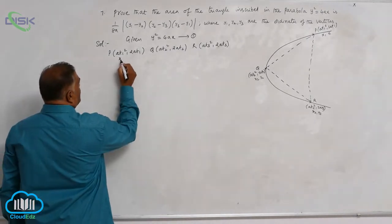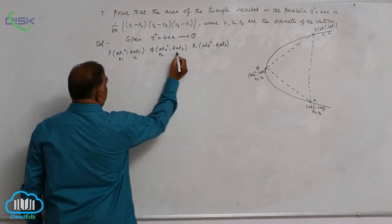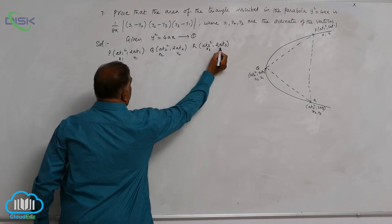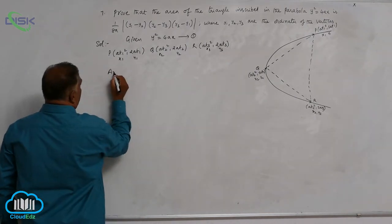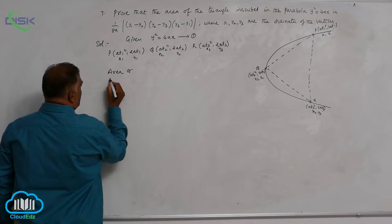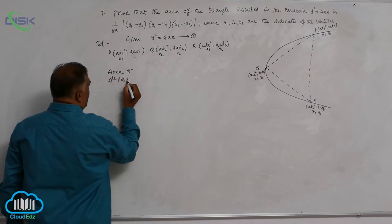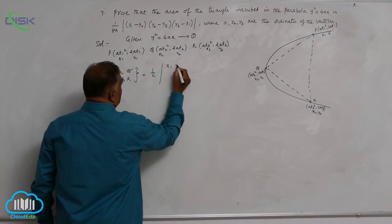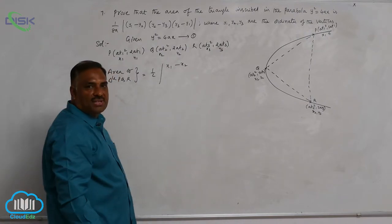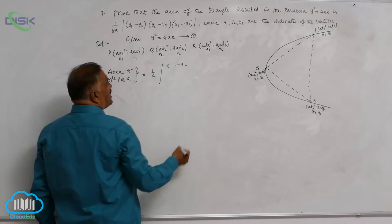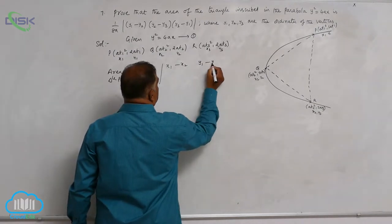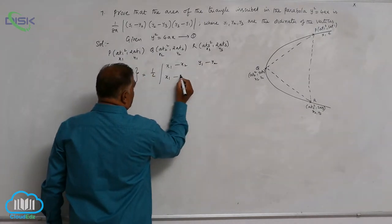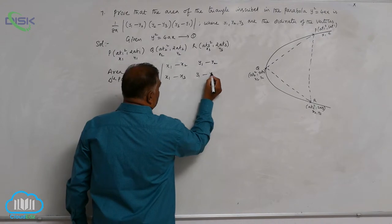We know the formula. This is x₁, y₁, x₂, y₂, x₃, y₃. Area of triangle PQR is given by 1 by 2 into x₁ minus x₂. We remember this formula from first year coordinate geometry. y₁ minus y₂, x₁ minus x₃, y₁ minus y₃.